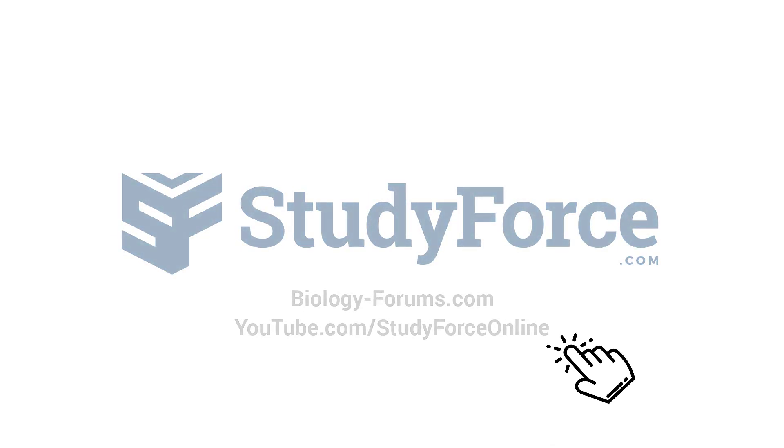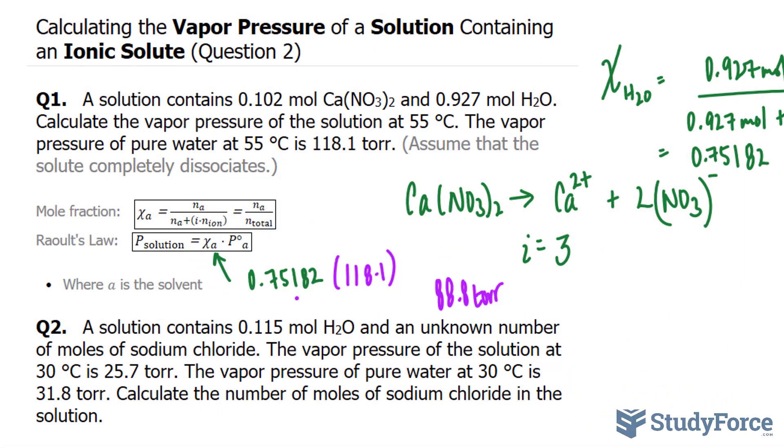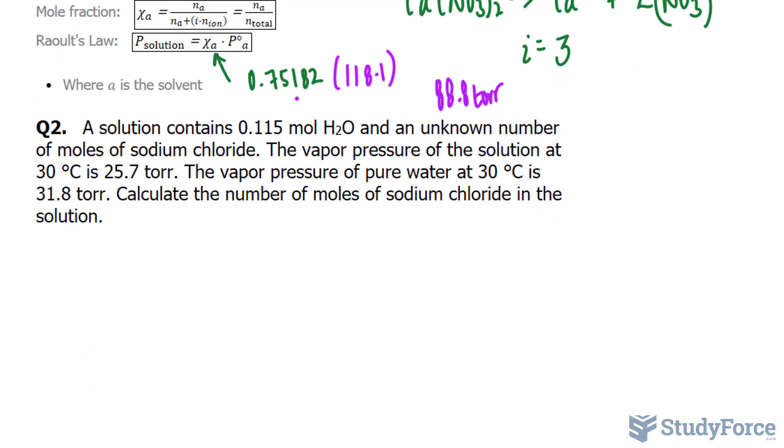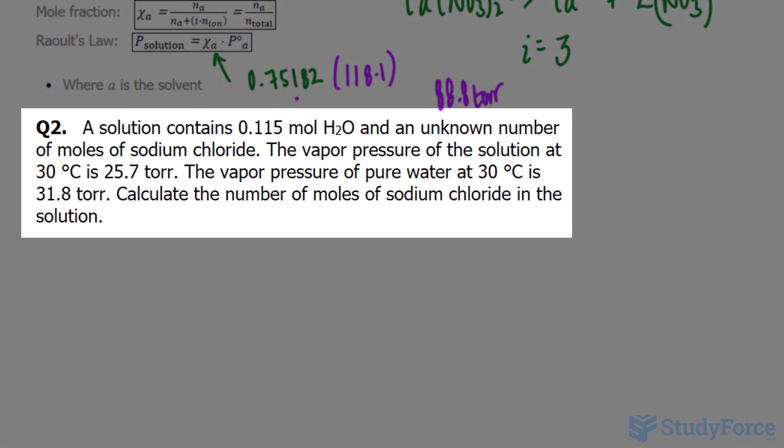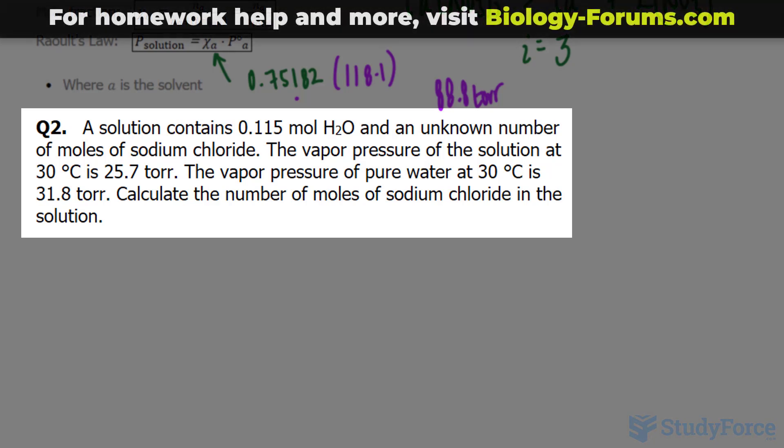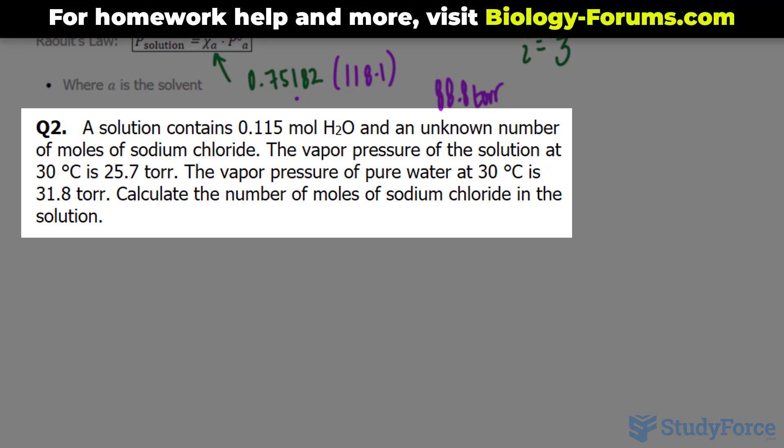Welcome back to question 2 of this series where we calculate the vapor pressure of a solution containing an ionic solute. This time our question reads: a solution contains 0.115 moles of water and an unknown number of moles of sodium chloride. The vapor pressure of the solution at 30 degrees Celsius is 25.7 torr. The vapor pressure of pure water at 30 degrees Celsius is 31.8 torr.